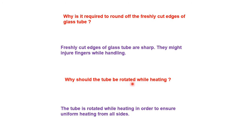Why should the tube be rotated while heating? Whenever you simply heat at one particular point, you are not supplying uniform heat. When you supply uniform heat, the entire glass area will melt so that we can easily bend it properly. If you heat only at a particular point, only that becomes softer, and when you bend it only that part bends — the other part will not bend properly. So for uniform heating and proper bending, we have to keep rotating the area where we are heating, keeping the glass tube moving in our hand.